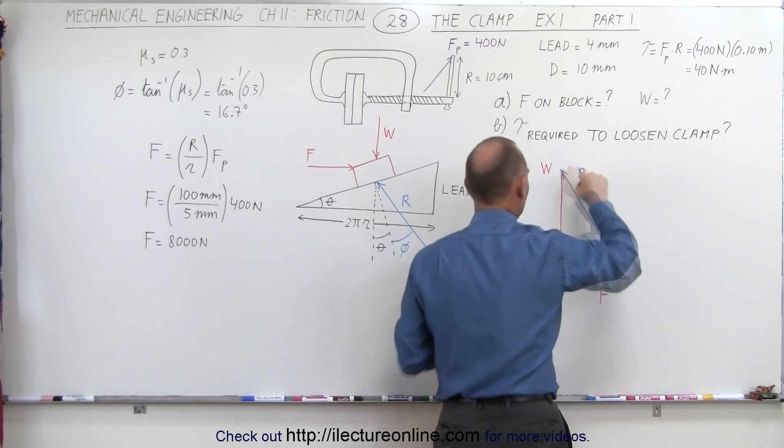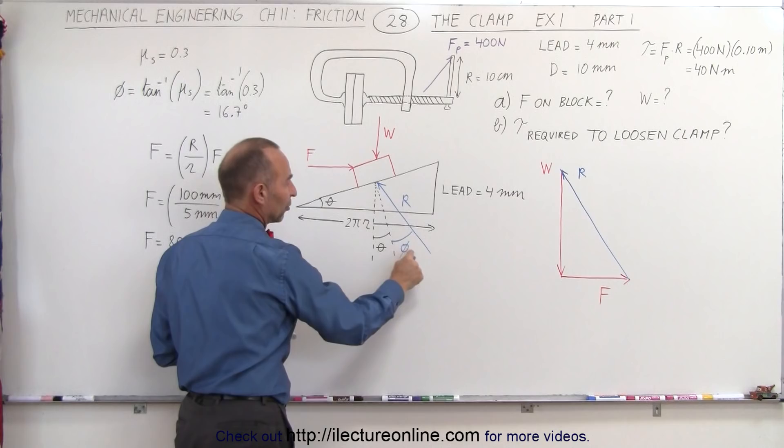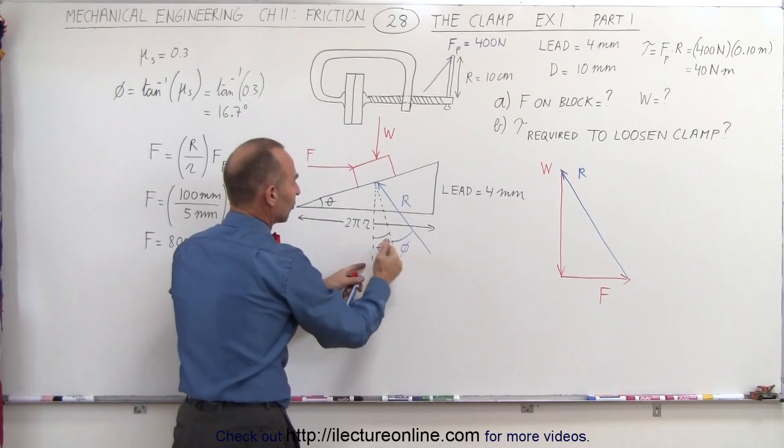Now notice that the angle between the reaction force and the vertical here is going to be the sum of theta plus phi. So this is the case where you have to add the two together, and phi is larger than theta. And well in this case it doesn't really matter if it's larger or not.